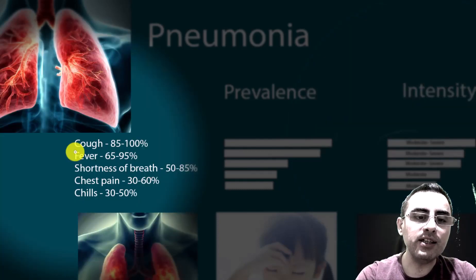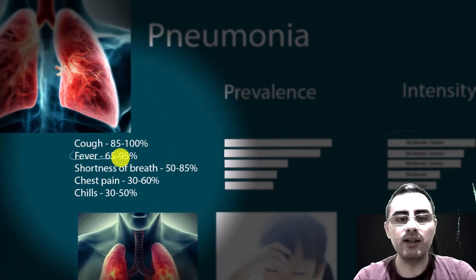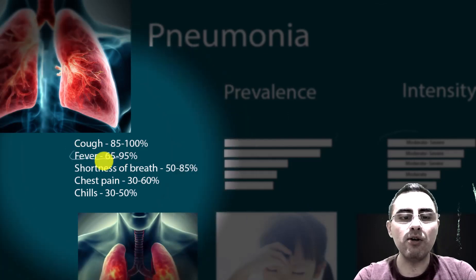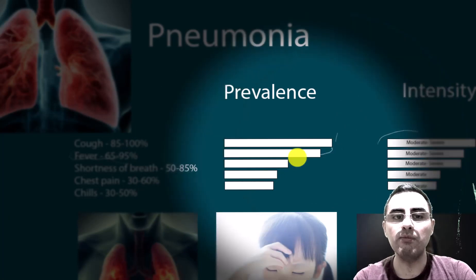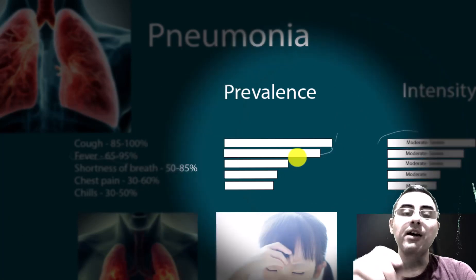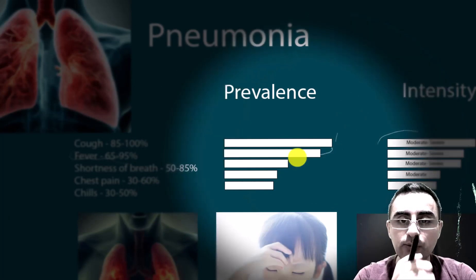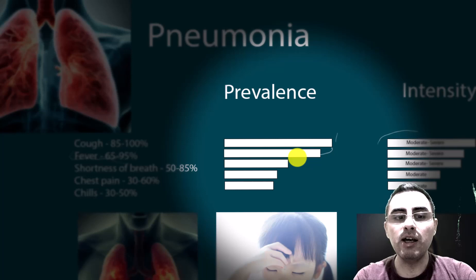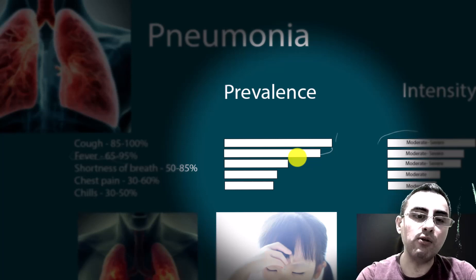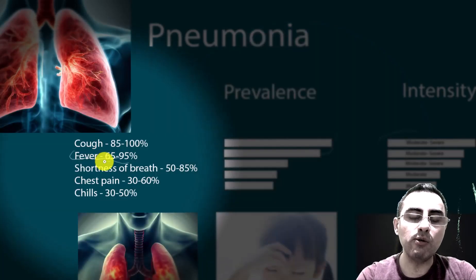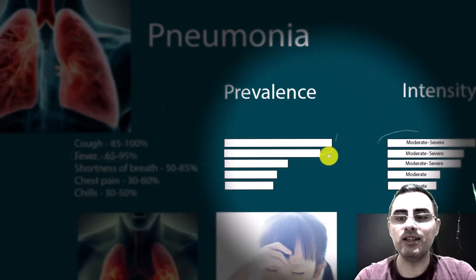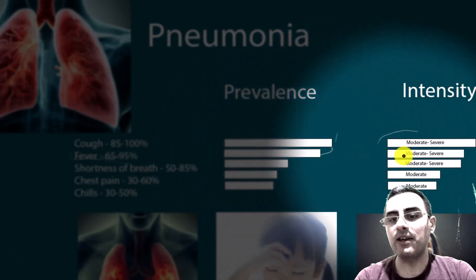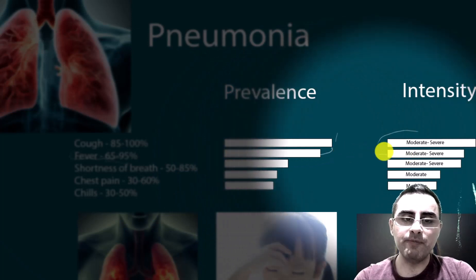Another common symptom is fever. Fever occurs in almost 100% of pneumonia cases. We do have atypical pneumonia, which has no fever or low-grade fever, but in most cases there is high fever — moderate or severe.